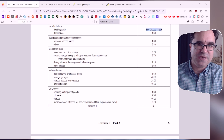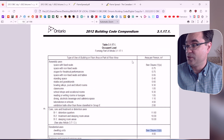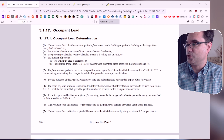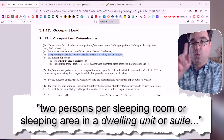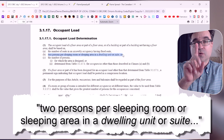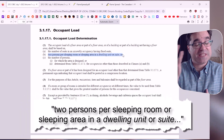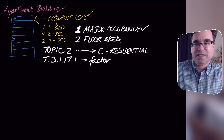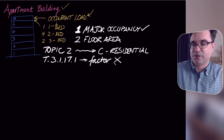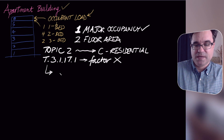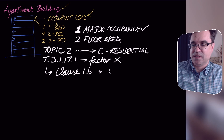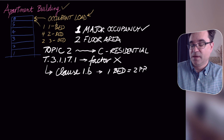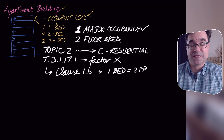So we go to Clause 1b, which is right here. In very simple terms, Clause 1b says one bedroom equals two people. There isn't a factor to be used in the traditional sense; instead, because it points to Clause 1b, one bedroom equals two people.